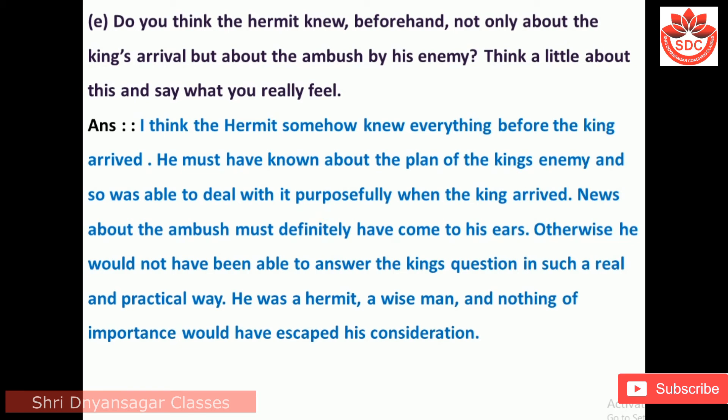E. Do you think the hermit knew beforehand not only about the king's arrival but about the ambush by his enemy? Answer: I think the hermit somehow knew everything before the king arrived. He must have known about the plan of the king's enemy and was able to deal with it purposefully when the king arrived. News about the ambush must definitely have come to his ears; otherwise, he would not have been able to answer the king's questions in such a real and practical way. He was a wise man and nothing of importance would have escaped his consideration.